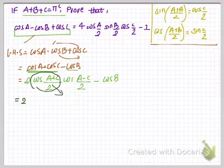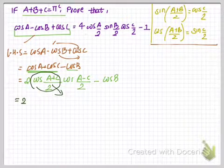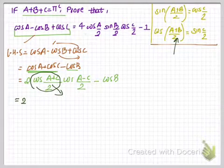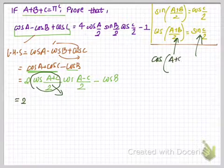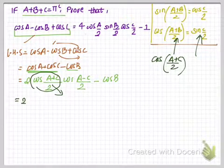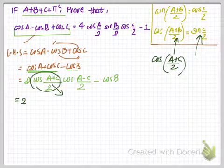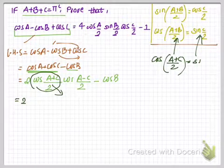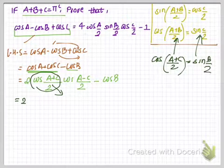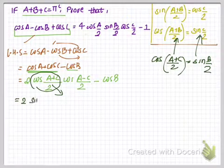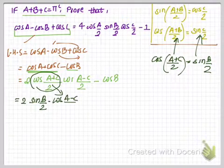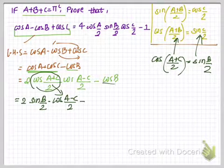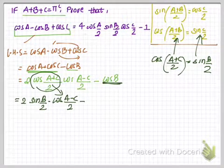Now I need to change cos((A+C)/2) in terms of sine. We know cos((A+B)/2) = sin(C/2); by the same logic, replacing B with C, cos((A+C)/2) = sin(B/2). So I replace it: 2 sin(B/2) · cos((A−C)/2) − cos B.